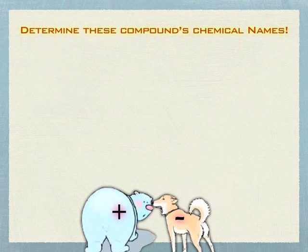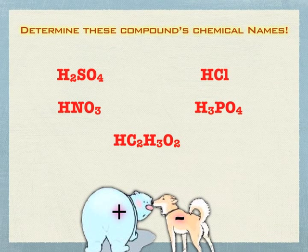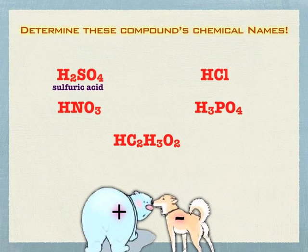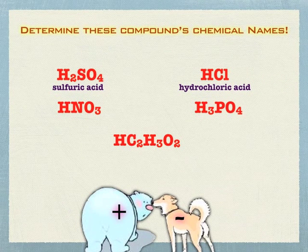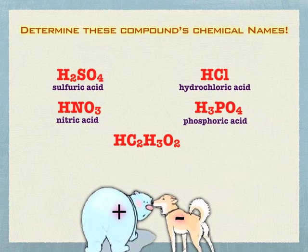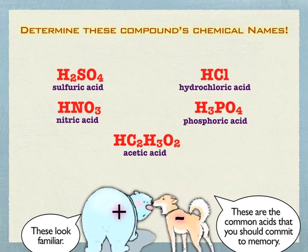Here are some other acids to name. Welcome back. H₂SO₄ — focus on the anion: SO₄ is sulfate, so this becomes sulfuric acid. Cl⁻ is chloride, so this is hydrochloric acid. NO₃⁻ is nitrate, so this becomes nitric acid — the -ate becomes -ic. PO₄³⁻ is phosphate, so that becomes phosphoric acid, with a slight name tweak. And this last one looks tough, but it's just acetate, so that becomes acetic acid — they separated out the hydrogens to give you a hint that it's an acid. These are all common acids you really want to commit to memory; you should be able to write these down even without access to a common ion chart.